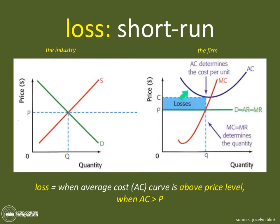Before we draw it, we know that the lowest point of the average cost curve must be right at the marginal cost curve — not at the quantity. So we draw that — there we go, this is the AC or ATC curve, the same curve. Then we draw the line up from the quantity, and this box right here is what shows our loss.